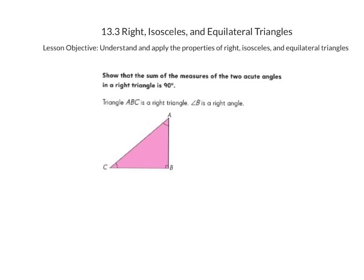For our first example, we're going to show that the sum of the measures of the two acute angles in a right triangle is equal to 90 degrees. Something important to remember is that when you add up all the angles in a triangle, it's going to total up to 180 degrees. Because we know that triangle ABC is a right triangle, and we can tell from our triangle that angle B is a right angle, we know that angle B is equal to 90 degrees.